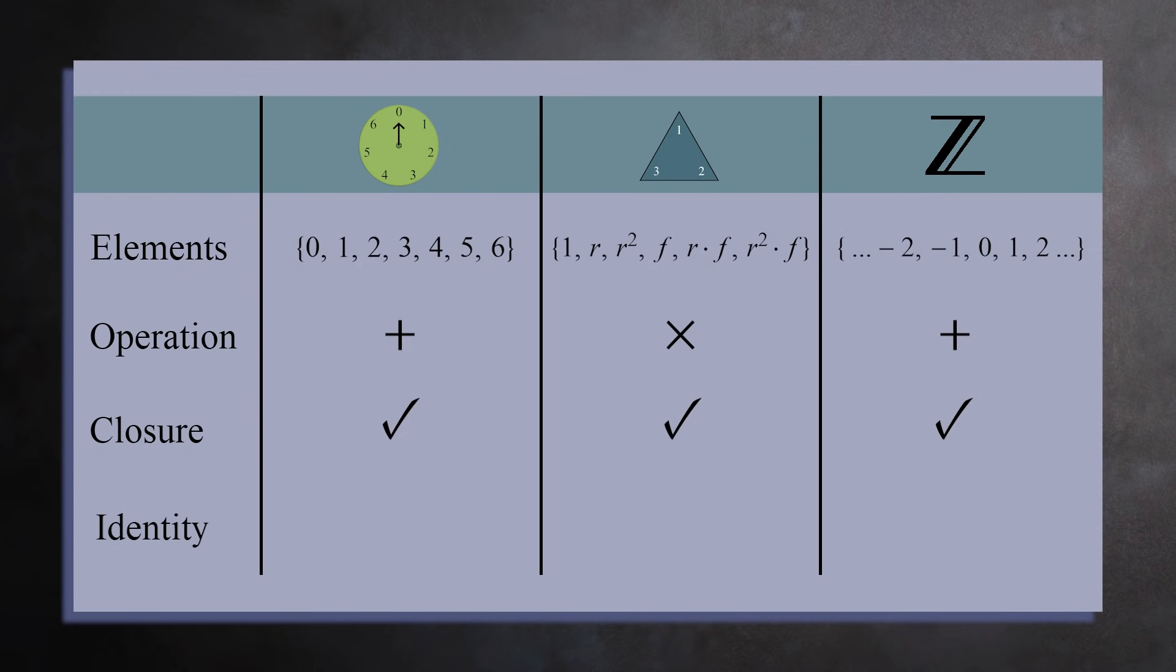All three structures also have something called an identity element. This is an element that has no effect when combined with other elements. For the integers mod 7, it's 0. If you take any number x on the clock and add 0, you get x. For the triangle, the identity element is the transformation 1. This is a transformation where you pick up the triangle and drop it, unchanged. If you multiply any transformation y by the transformation 1, you get y. And for the integers, the identity element is also 0. For any integer z, z plus 0 equals z.